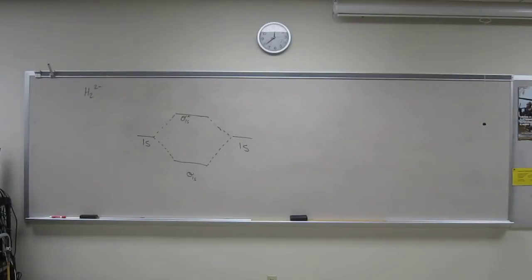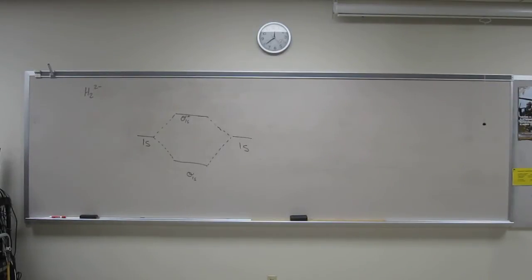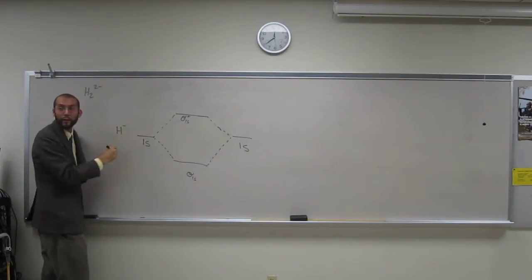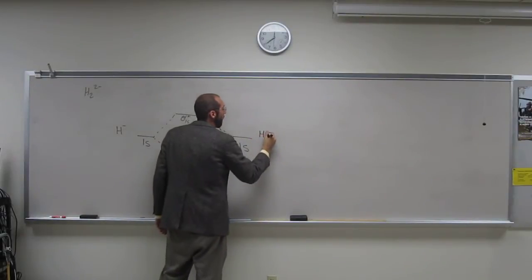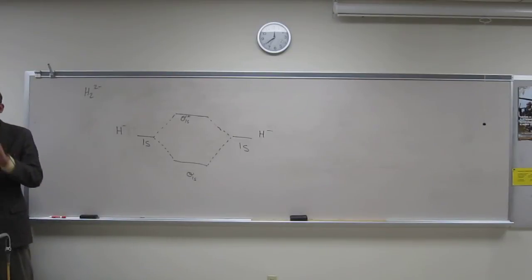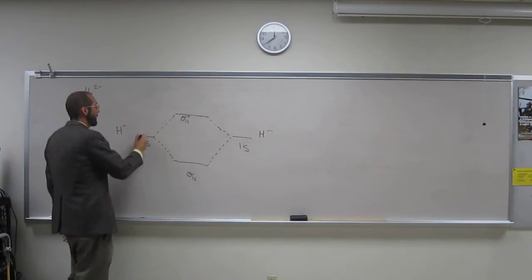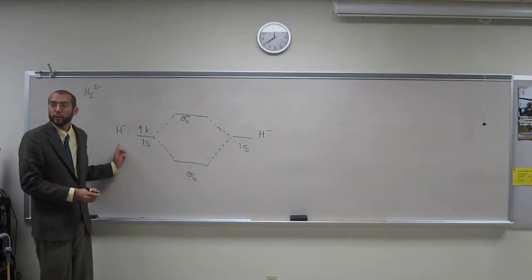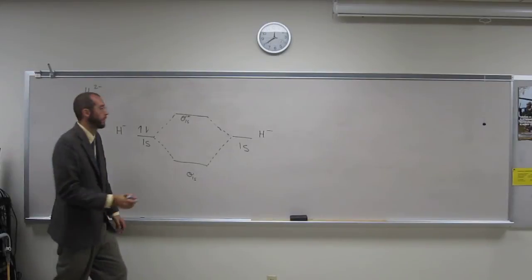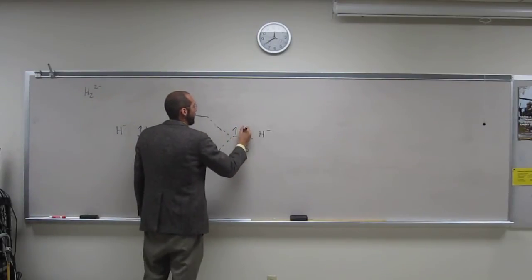So H2 2- is what we're looking at. So what do we got? We've got H- and H-, right? Because that's H2 and 2-. So when we fill these guys up, we're going to have two electrons, because hydrogen normally has one valence electron. We add an electron to it, it's got two valence electrons. Same thing there.